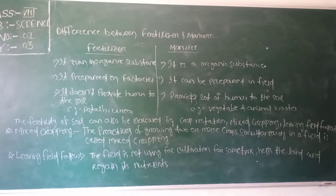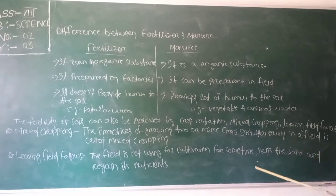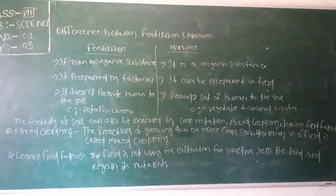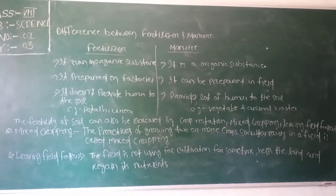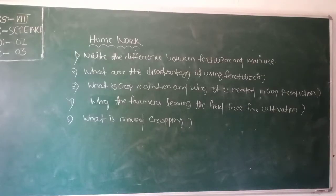The last point is leaving the field fallow. Fallow means free — the field is not used for cultivation for some time. It helps the land regain its nutrients. Dead plants, animals, and other decaying matter are acted upon by microorganisms and decompose to form humus. That is why fields are left free for some time, so they regain the nutrient power of the soil.